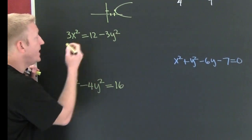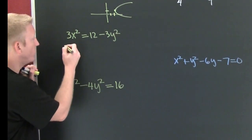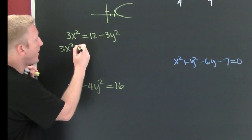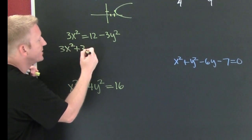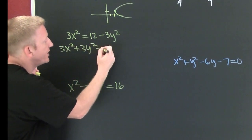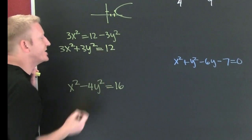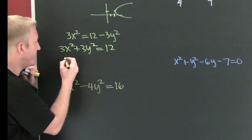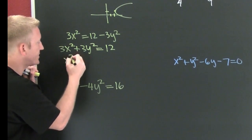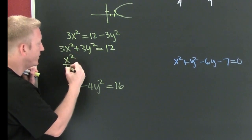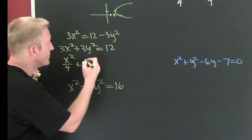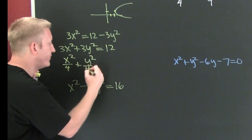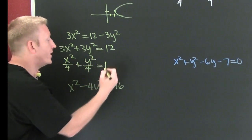We need to put it in standard form — x's and y's on one side. This is gonna be 3x squared plus 3y squared equals 12. Set it to 1. Divide. 3 divided by 12: this is gonna be x squared over 4 plus 3 divided by 12, y squared over 4. That's equal to 1.